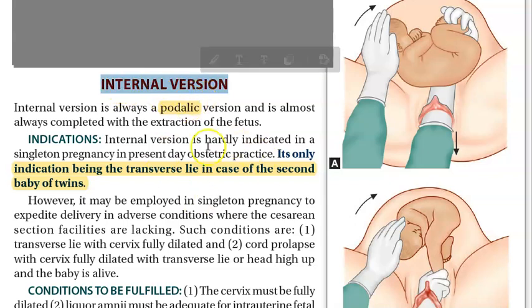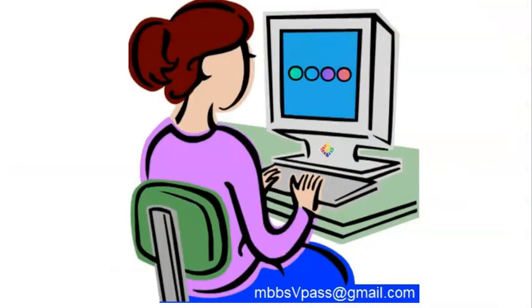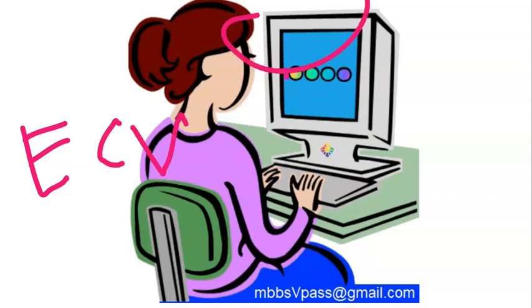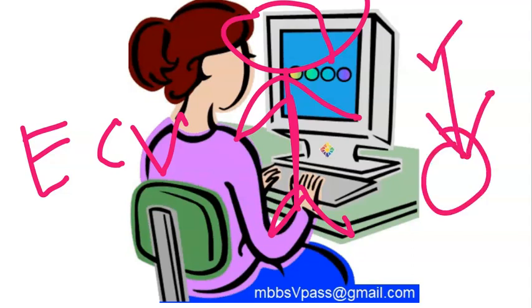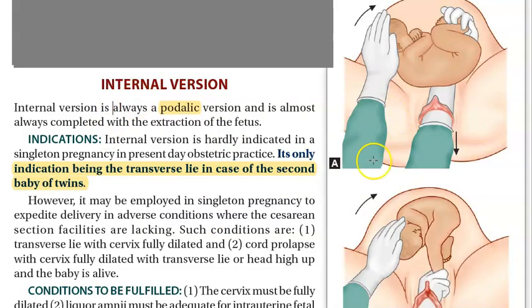In this video, let us look at internal version — that is, turning the baby inside by putting your hand inside. This is internal version. You have already seen something called external cephalic version. External cephalic version is when the baby is breech, and they are trying to make it a cephalic presentation around 36 weeks of pregnancy. Externally, without putting the hand inside, they make maneuvers on the mother's abdomen to make the baby cephalic presentation.